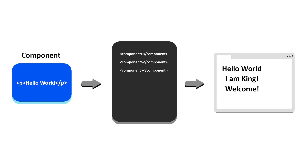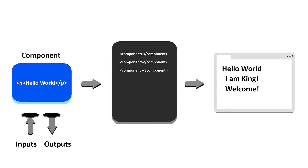Or simply, to display a different message instead of the same thing over and over again. In Angular, we can give our components entry points to establish a connection with the outside. These entry points are known as inputs and outputs. Inputs are used to receive information from the outside, and outputs are used to release information from the inside.